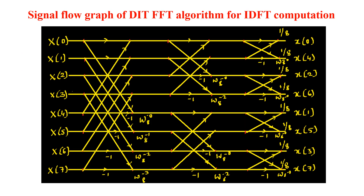With all these modifications, the signal flow graph of the DIT FFT algorithm for IDFT computation looks like this: at the input we have X(0), X(1), X(2) through X(7) — these are the DFT coefficients. At the output we have the IDFT values in bit-reversed order: x(0), x(4), x(2), x(6) for the even indexed samples, followed by x(1), x(5), x(3), x(7) for the odd indexed samples.